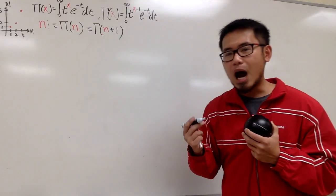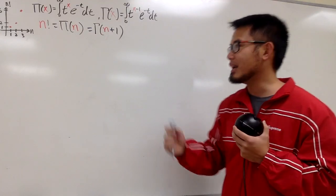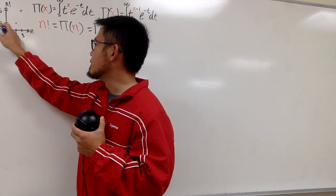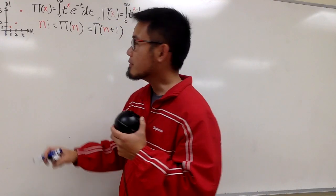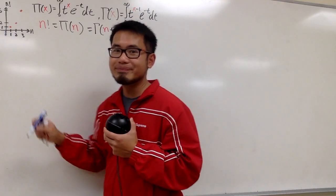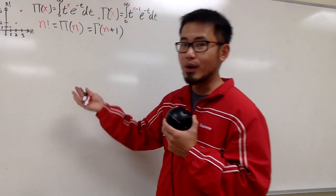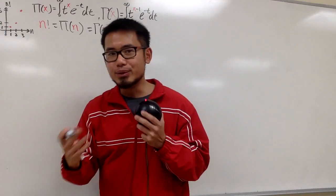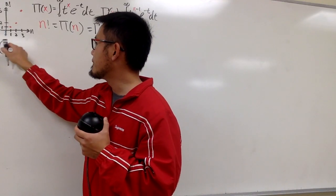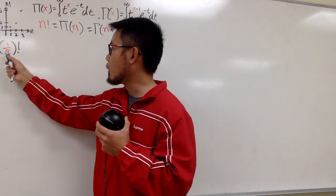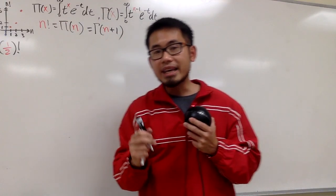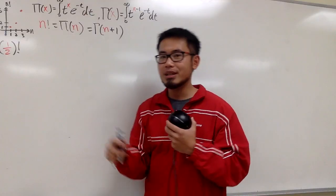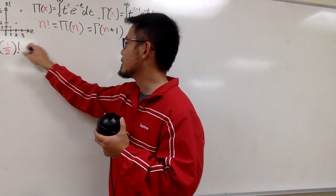Let me show you how we can calculate (1/2) factorial. Last time we saw 0, 1, 2, 3 factorials — 0 factorial is also equal to 1. I want to know what happens when n equals 1/2. When we connect the dots with a smooth curve, we should get a value for (1/2) factorial using one of these functions. Notice I cannot say (1/2)! = (1/2)×(1/2−1)×⋯; I have to use the integral definition.